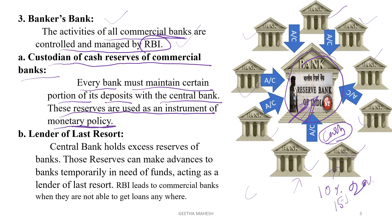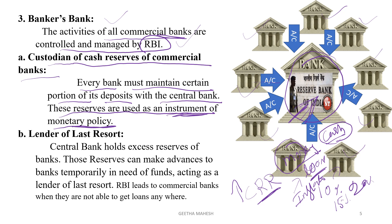This reserve is called the cash reserve ratio. Whenever banks have more money, they can give more loans. Whenever giving more loans leads to an inflationary situation, RBI will increase the cash reserve ratio. In this way it is used as an instrument of monetary policy. As custodian of cash reserves, all banks need to open an account with RBI and keep a certain proportion of their deposits with the central bank.